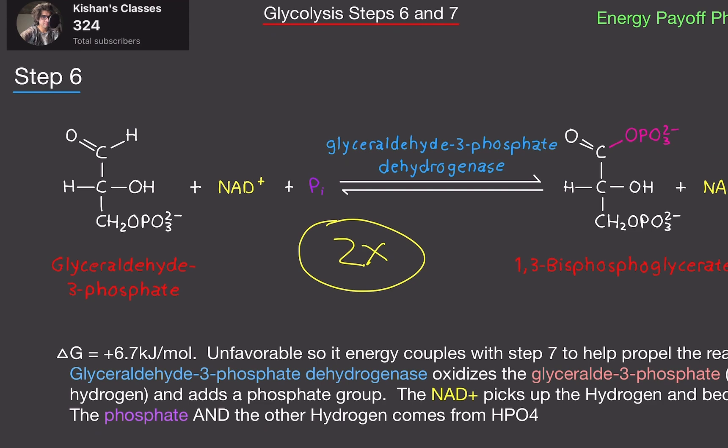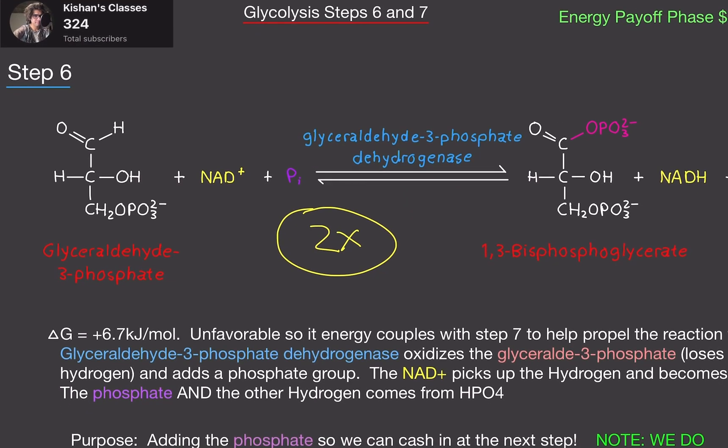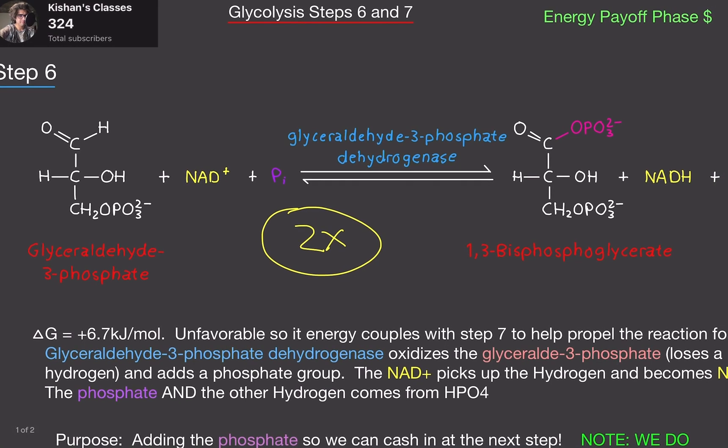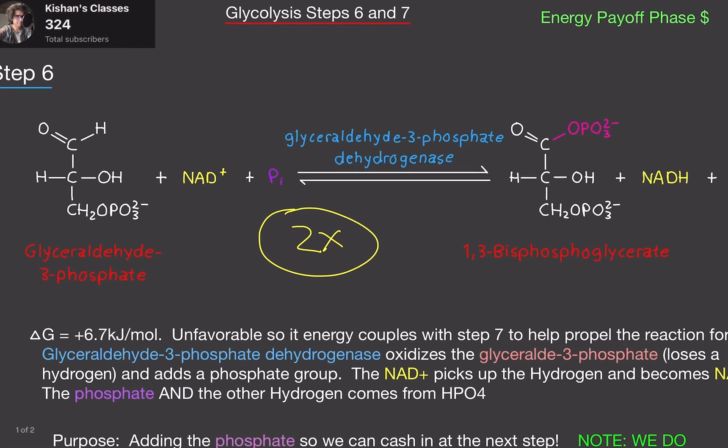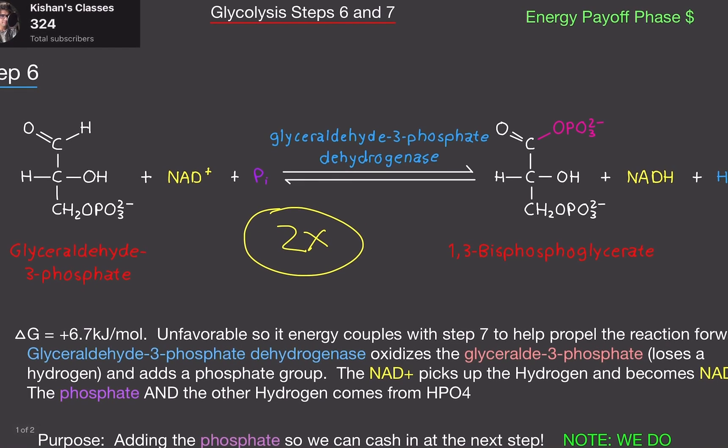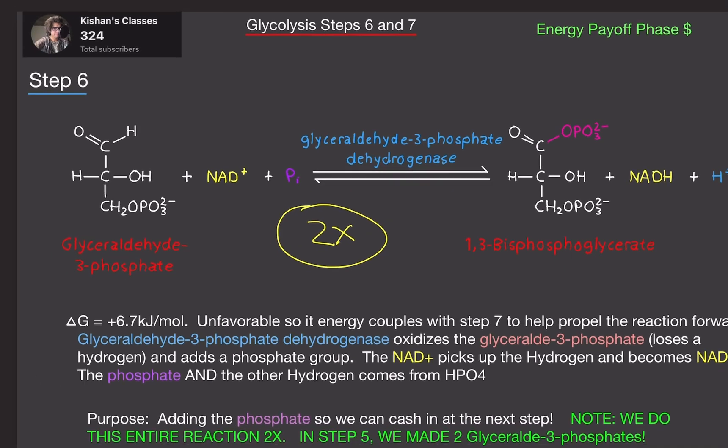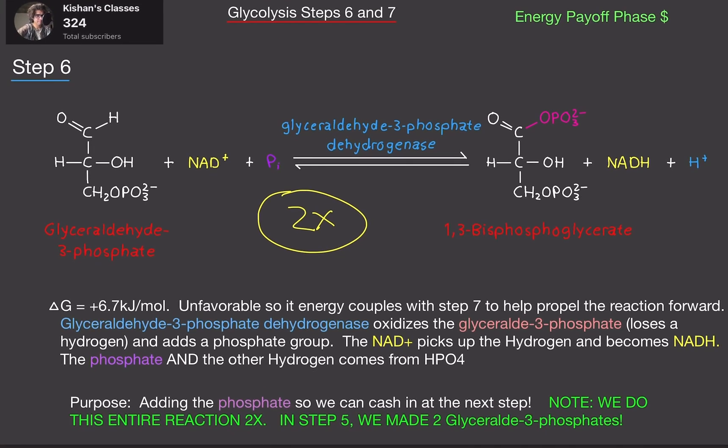So we start off with glyceraldehyde 3-phosphate. And in the reactant side, we're going to have one molecule here of NAD+. We're also going to have one molecule of phosphate. We're going to use the enzyme glyceraldehyde 3-phosphate dehydrogenase to make 1,3-bisphosphoglycerate with resulting NADH and hydrogen ion.